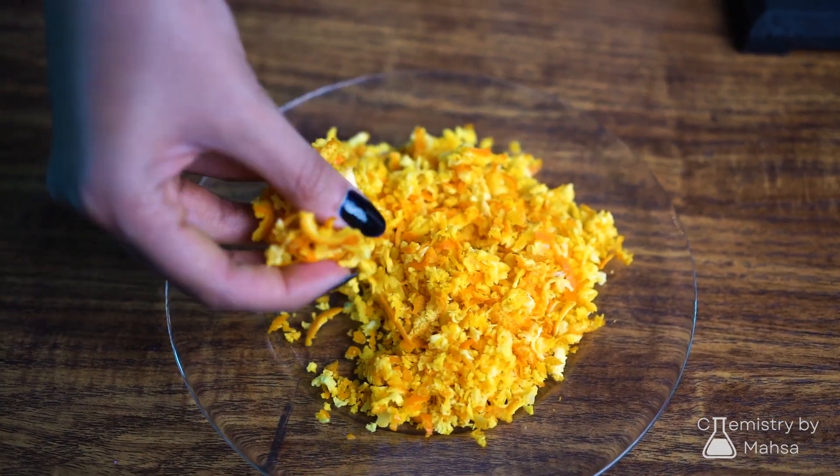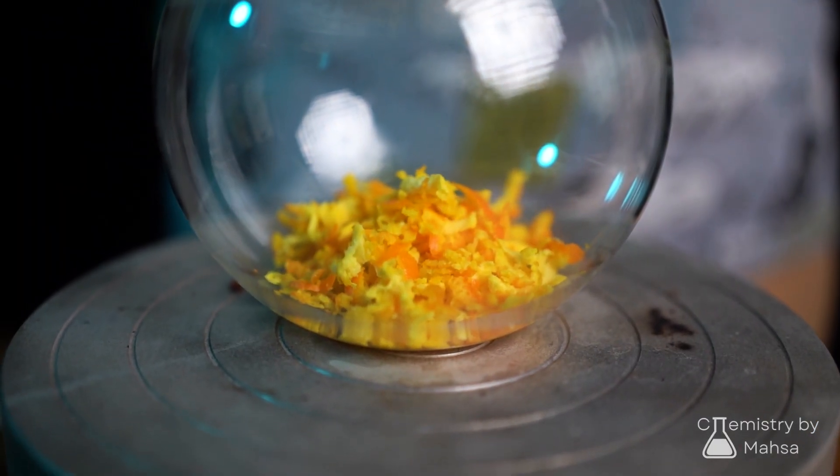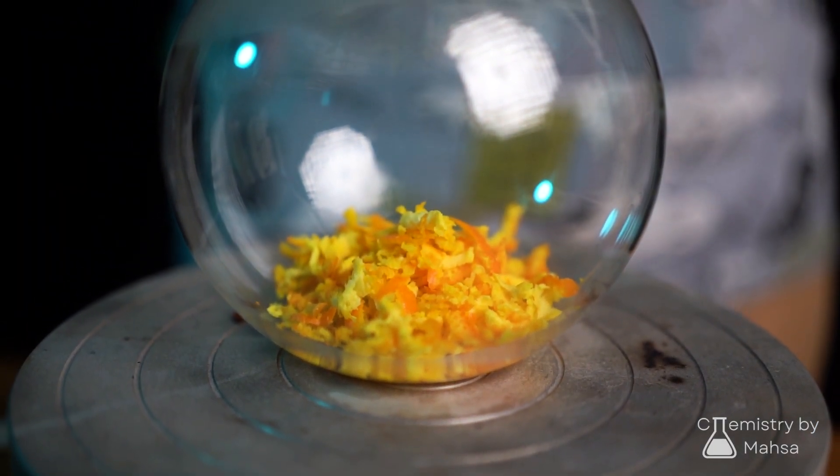Most of orange's essential oil is in its peels, so we need to peel it off. The smaller the pieces, the better the process, so we can use a grater.